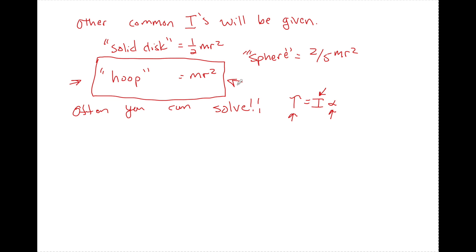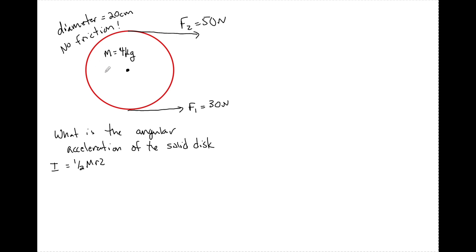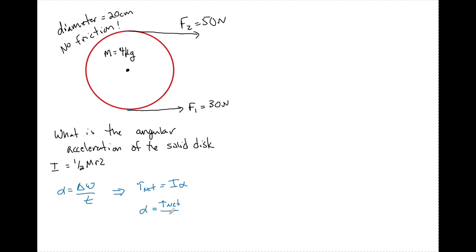Let's look at some examples of how we can use this formula. In this example, I have a frictionless pulley with a diameter of 20 centimeters, a mass of four kilograms, and two forces acting tangent to the pulley — one of 50 Newtons and one of 30 Newtons. I want to know the angular acceleration of the disk where I equals one half M R squared. Our first instinct might be to use kinematics — alpha equals change in omega over T — but we don't know initial and final speeds. So instead we use net torque equals I times alpha, giving us alpha equals net torque over I. This is super similar to A equals F net over M.